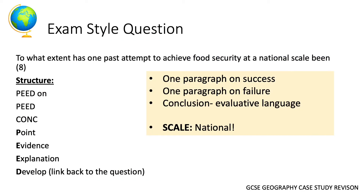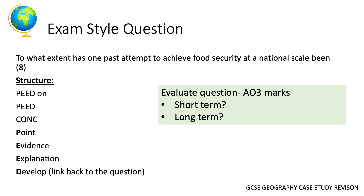Looking at an exam question: 'To what extent has one past attempt to achieve food security at a national scale been successful?' It's an eight-mark question, so we're looking for the PEDE structure. It's also an evaluate question, meaning we need to focus on AO1, AO2, and AO3 — knowledge, understanding, and evaluation. It's important to link to the idea of national scale. To get those evaluate marks, think about both the short term and the long term in your answer.